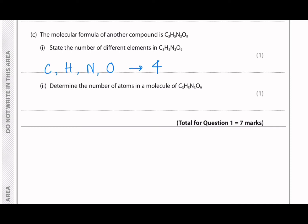You can just write four. And then the second part is to determine the number of atoms in a molecule of this compound. So to count the number of atoms, we have to pay attention to the small numbers underneath. So that means we have to add up all of them. It means 3 plus 5 plus 3 plus 9. And that comes up to 20 atoms. So you can just write 20.